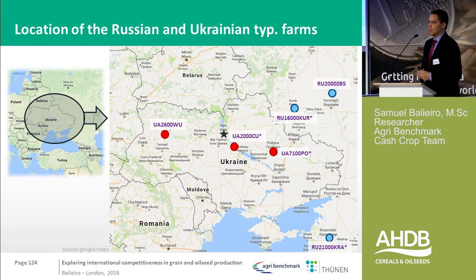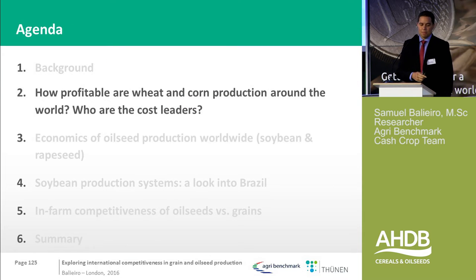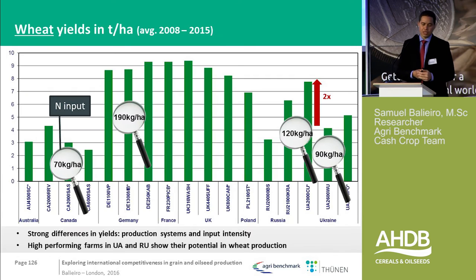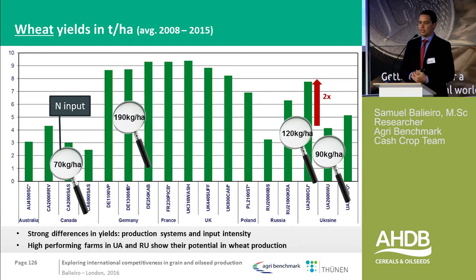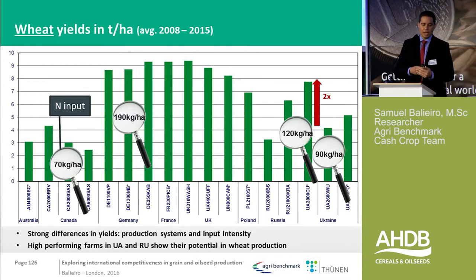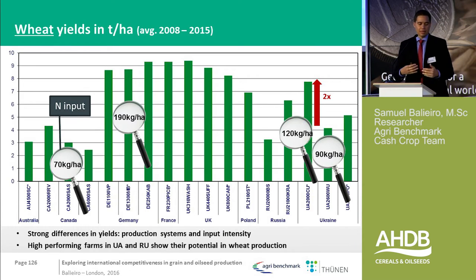The question is: how profitable is producing wheat and corn, and who are the cost leaders? Here we have Australia, Canada, Germany, France, UK, Poland, Russia, and Ukraine. What you see first is that those are yields in tons per hectare, and there is a very big difference. European countries produce very intensive systems, while Canada, Australia, Russia, and Ukraine have lower-yield systems.